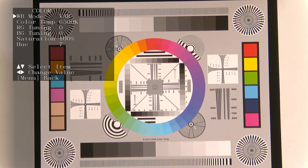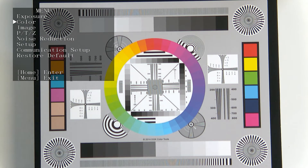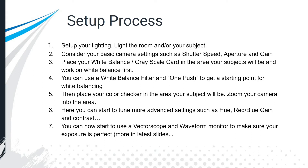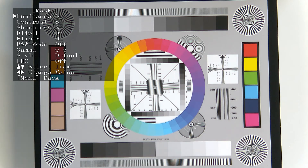The one-push white balance is a great place to start and easy to use. You can also do a manual tuning of the white balance. One of my personal favorites is the color temperature options — in a studio environment you can see how it changes, things getting a little more blue or a little more white. I'll be honest: I'm colorblind, so I let my producer handle color matching. Once you've done the one-push white balance or tuned it to your room and you're happy with the whites and blacks, you can move on to the image settings.